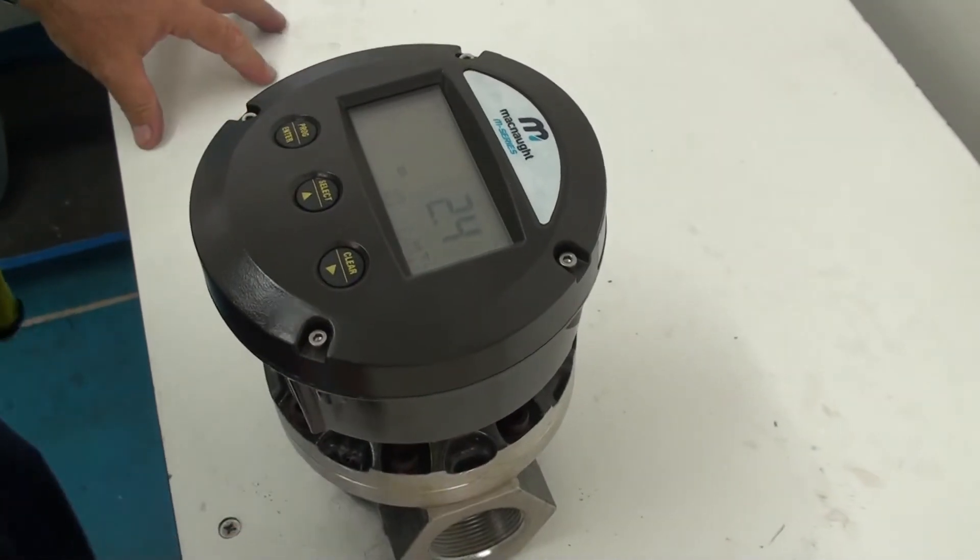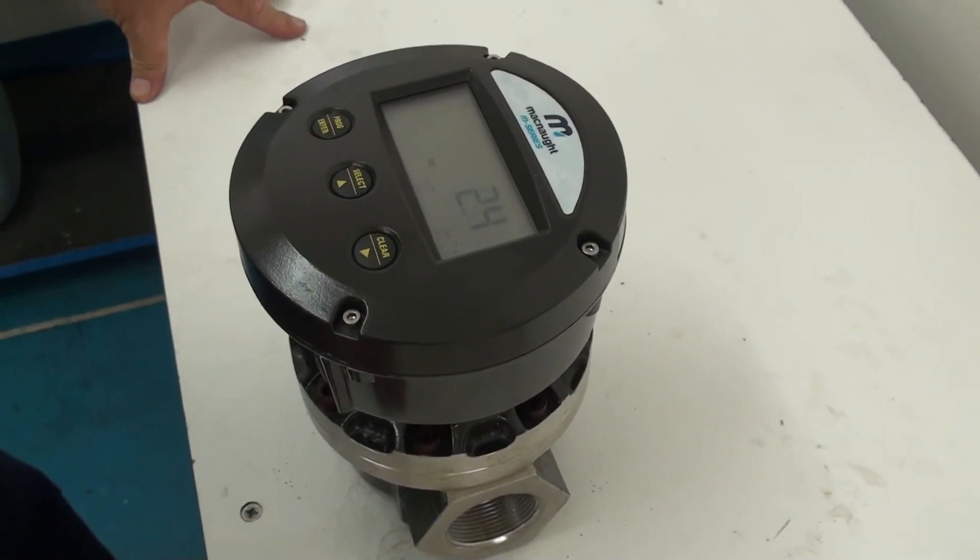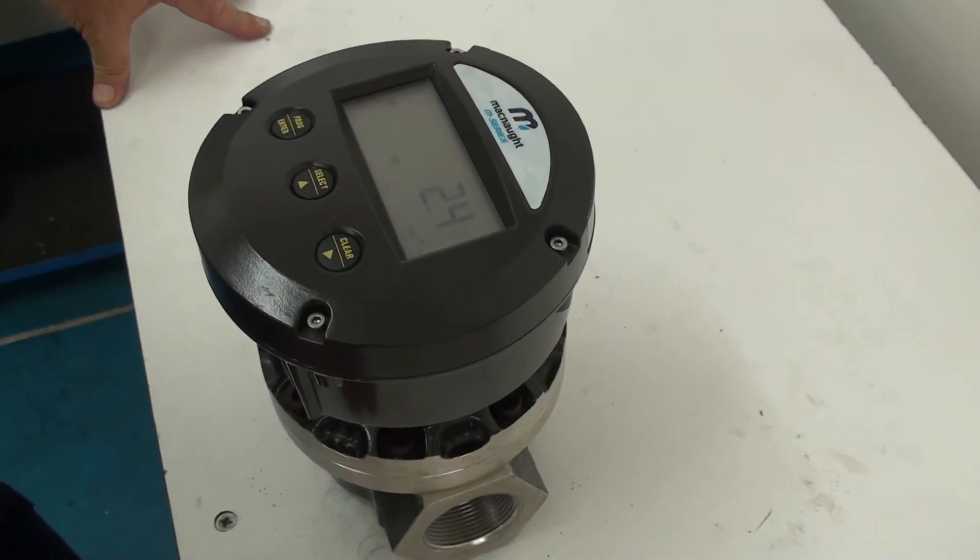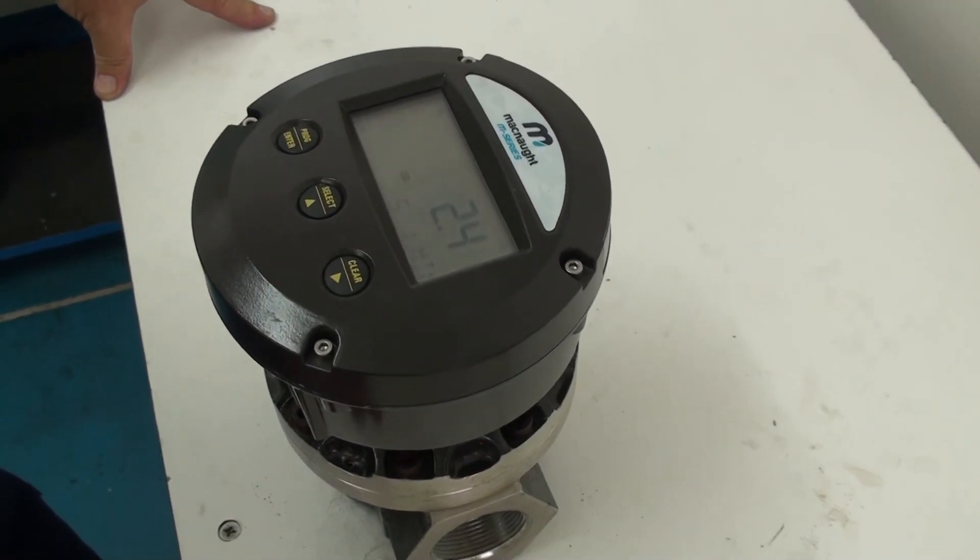That is how we disassemble, inspect and reassemble a McNaught electronic pulse meter.